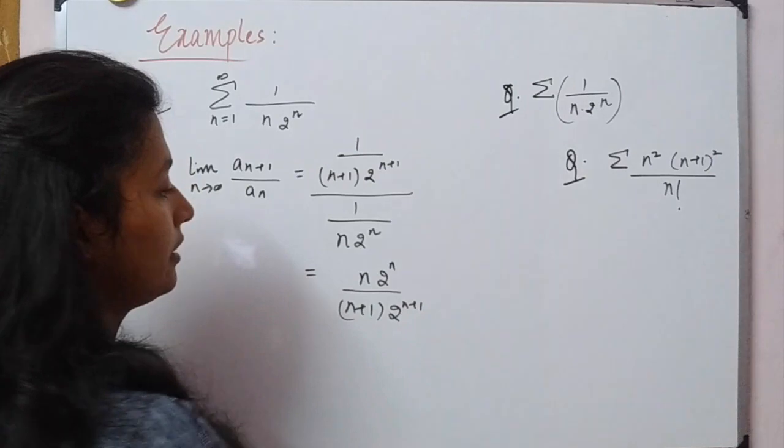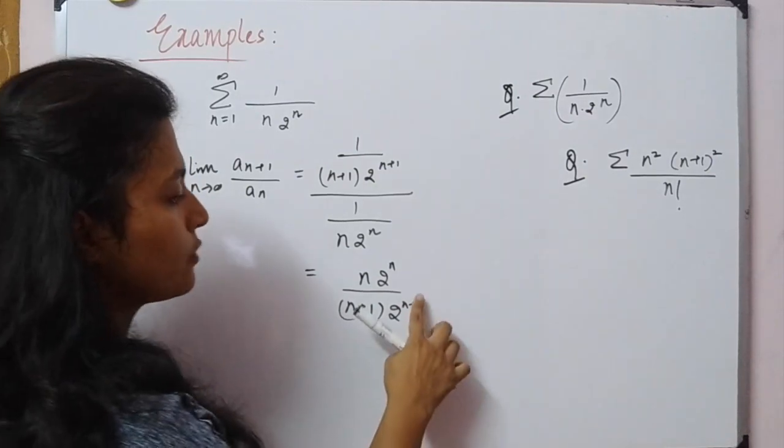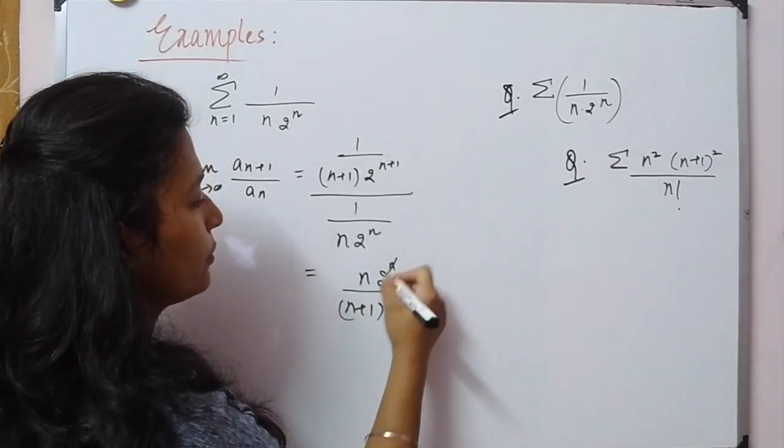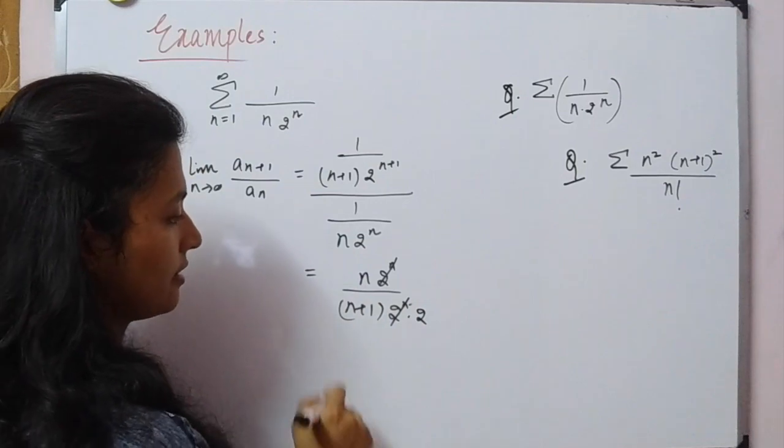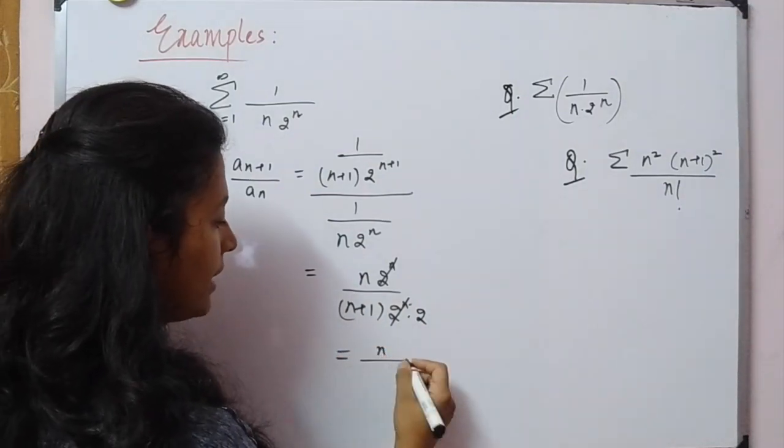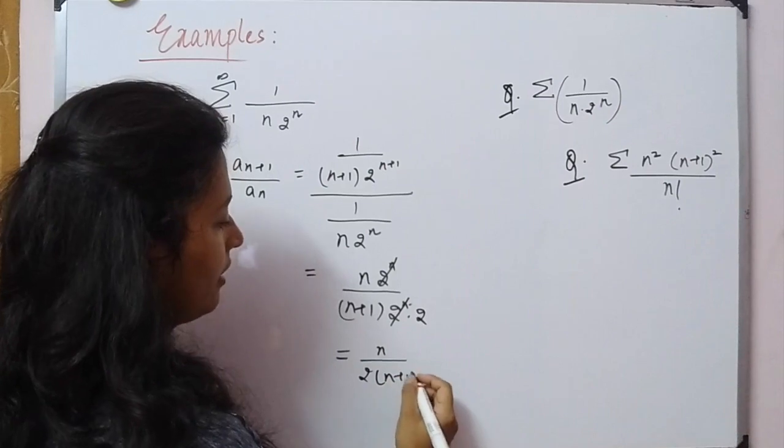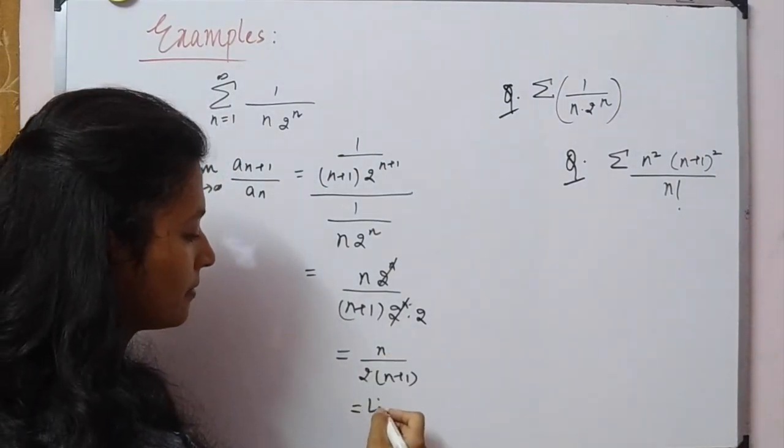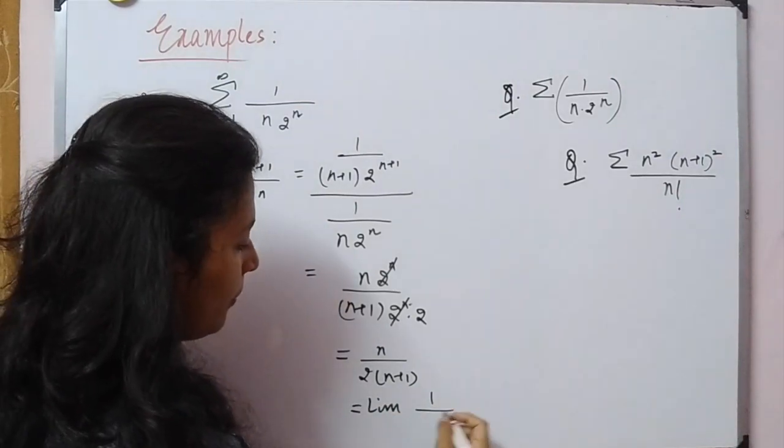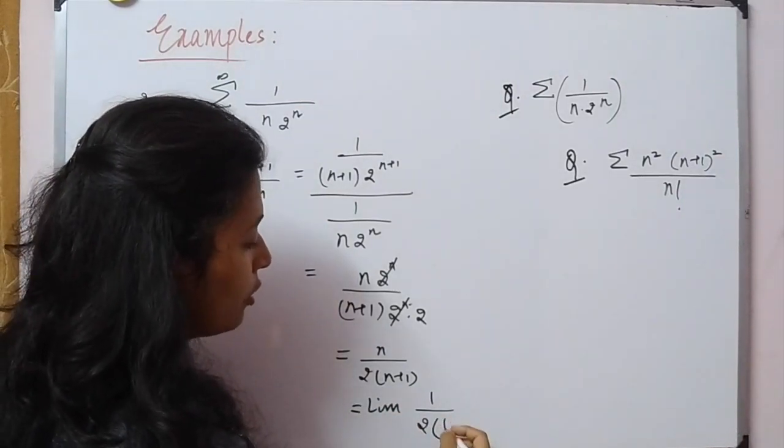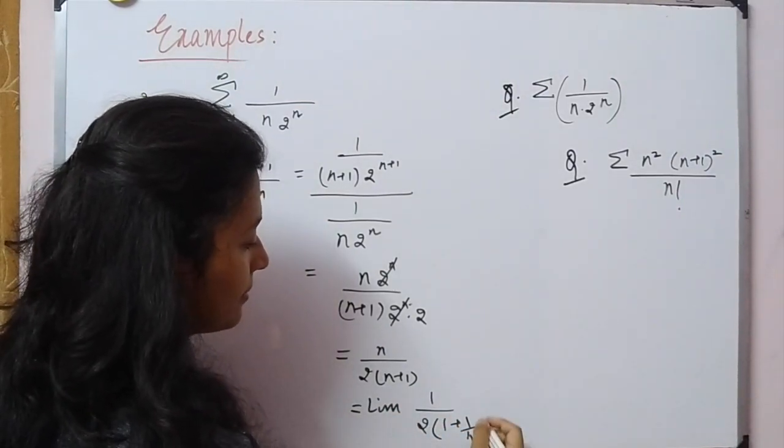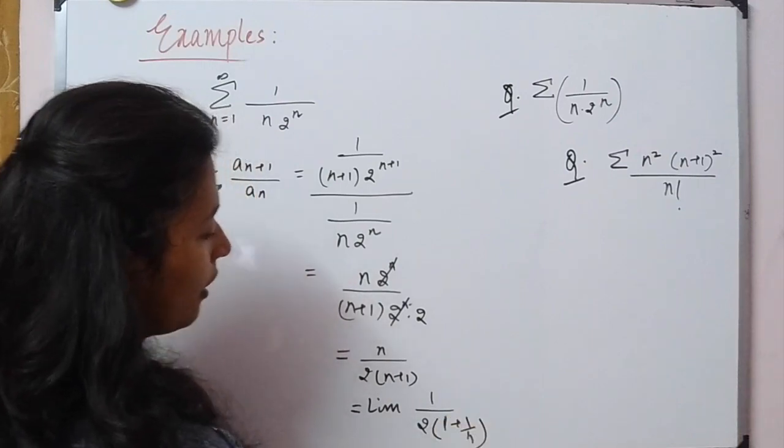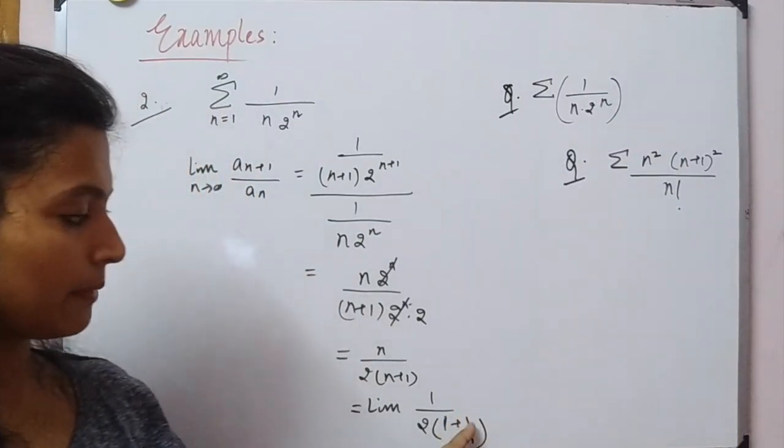It becomes (n·2ⁿ)/((n+1)·2^(n+1)). Now 2^(n+1) can be written as 2ⁿ·2, so the 2ⁿ terms cancel. What we're left with is n/(2(n+1)). Dividing numerator and denominator by n, we get 1/(2(1+1/n)).